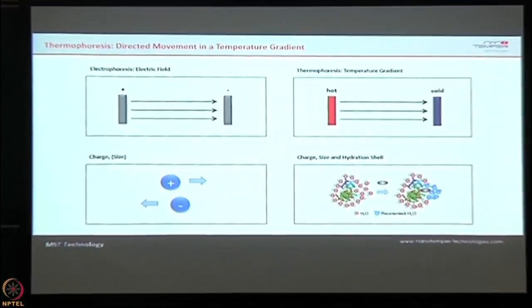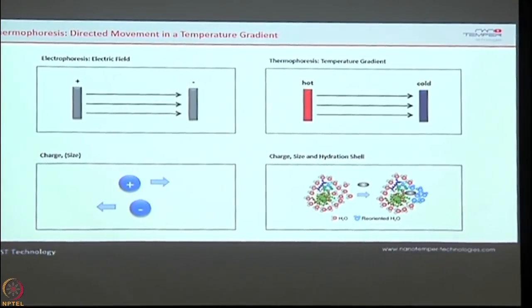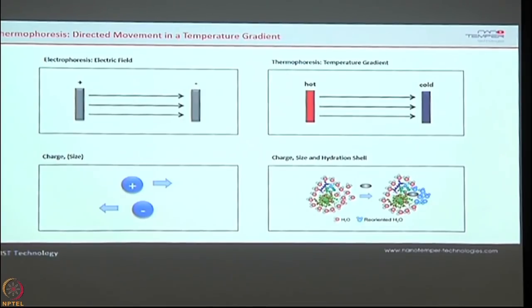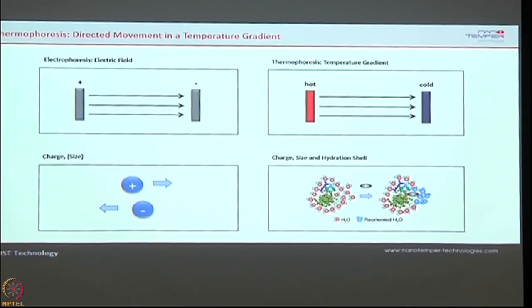The technology is micro-scale thermophoresis, or MST in short. Just as electrophoresis involves movement of molecules in an electric field based on size through a gel, thermophoresis is the movement of molecules in a temperature gradient — 'thermo' meaning temperature, 'phoresis' meaning movement. But thermophoresis is sensitive to three things: size, charge, and the hydration shell. Unlike electrophoresis which only detects size, here the movement depends on all three parameters.